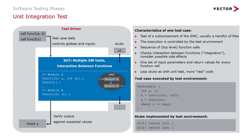Unit integration testing typically involves multiple modules tested together and also tests the data flow between functions. Stubbing and mocking is still necessary to resolve any missing software dependencies, but unit integration testing usually involves less stubs and more real code. The test harness is still responsible for setting up the input data, calling the function under test, controlling any data flow between functions, and verifying the output against the expected test results.